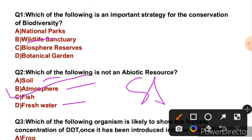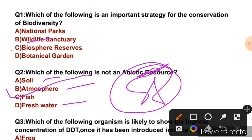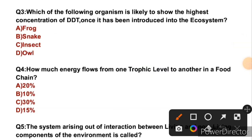This question JKSB has recently asked in the sub-inspector exam. Question 3: Which of the following organisms is likely to show the highest concentration of DDT once it has been introduced into the ecosystem? This question JKSB has recently asked in the sub-inspector exam.